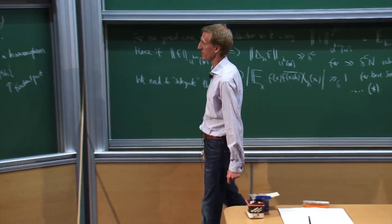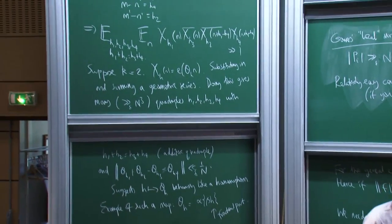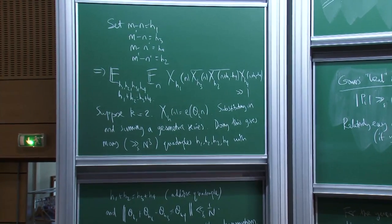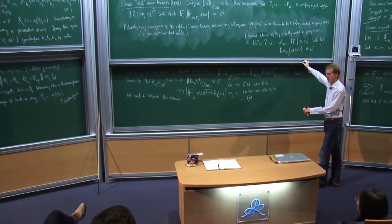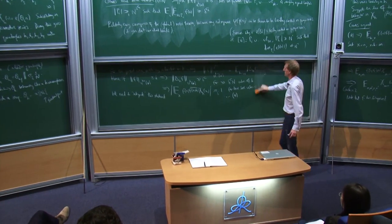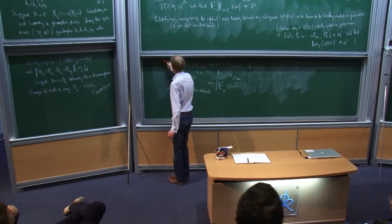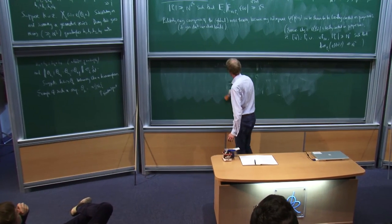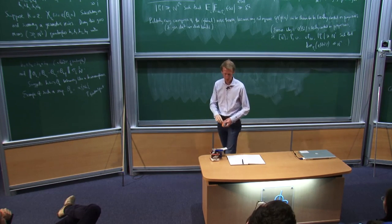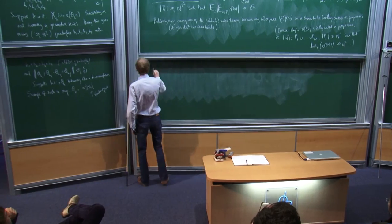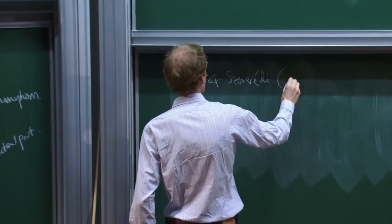He runs into difficulties that are somewhat parallel to the difficulties we have with the U4 norm and higher. Gowers' motivation was Szemerédi's theorem.